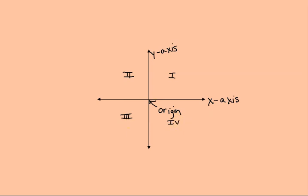An ordered pair means the same thing as a point, and it shows the location on the Cartesian coordinate system. To name a point, we use a capital letter, and the location of each specific point is given with two numbers — the x-value and the y-value — that correspond to the location of the point. We write it in parentheses, telling how far we go left or right on the x-axis, then how far we go up or down on the y-axis. A graph is a picture representation of an equation, and to graph just means to draw the picture of the equation.